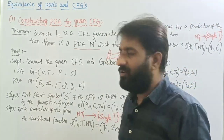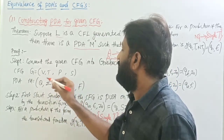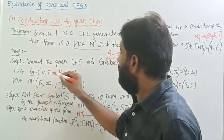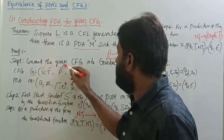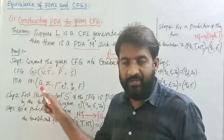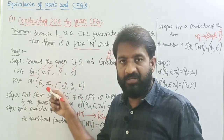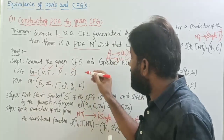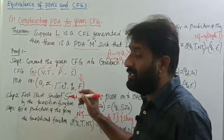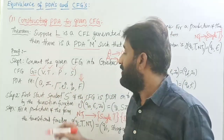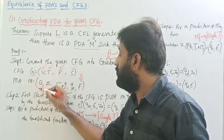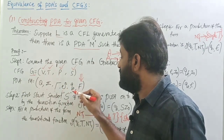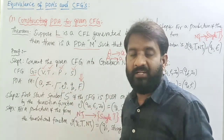Let's assume we have a grammar CFG G equals to (V, T, P, S), where V is the set of variables, T is the set of terminals, P is the set of productions, and S is the start symbol. For this grammar, we now have to construct a pushdown automaton M equals to (Q, Sigma, stack alphabet, transitions, initial state, and final state).